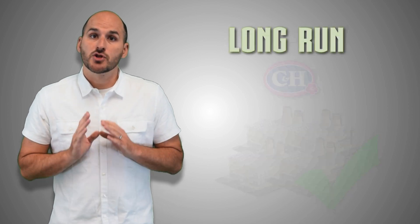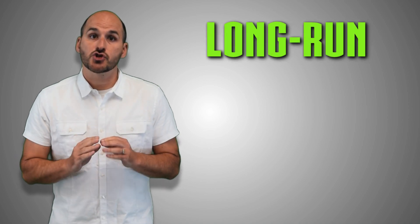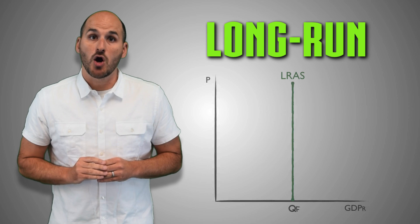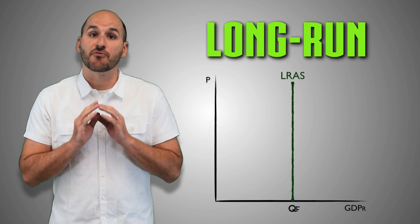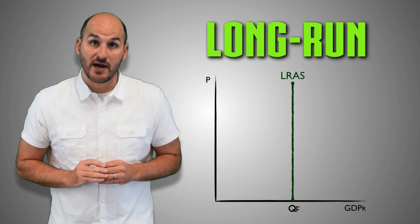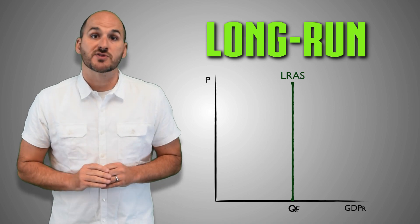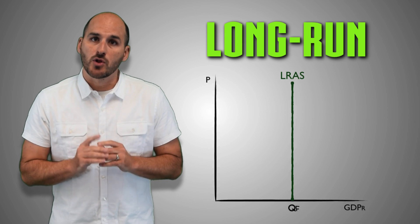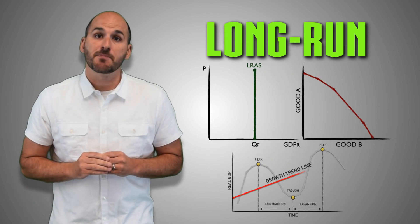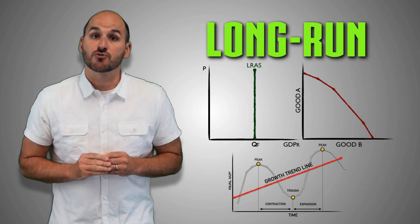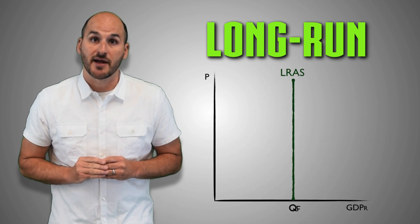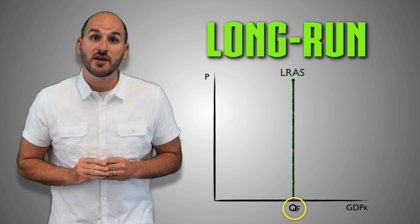In macroeconomics, the law of variable resources in long-run analysis is true for all firms across the entire economy, meaning that the long-run aggregate supply curve indicates the full potential real GDP that the aggregate economy can produce at a sustainable rate, given that all resources are variable. The long-run aggregate supply curve is the equivalent of an economy's production possibilities curve, or its growth trend line, and the quantity of real GDP output produced at the long-run aggregate supply curve is known as quantity full employment.